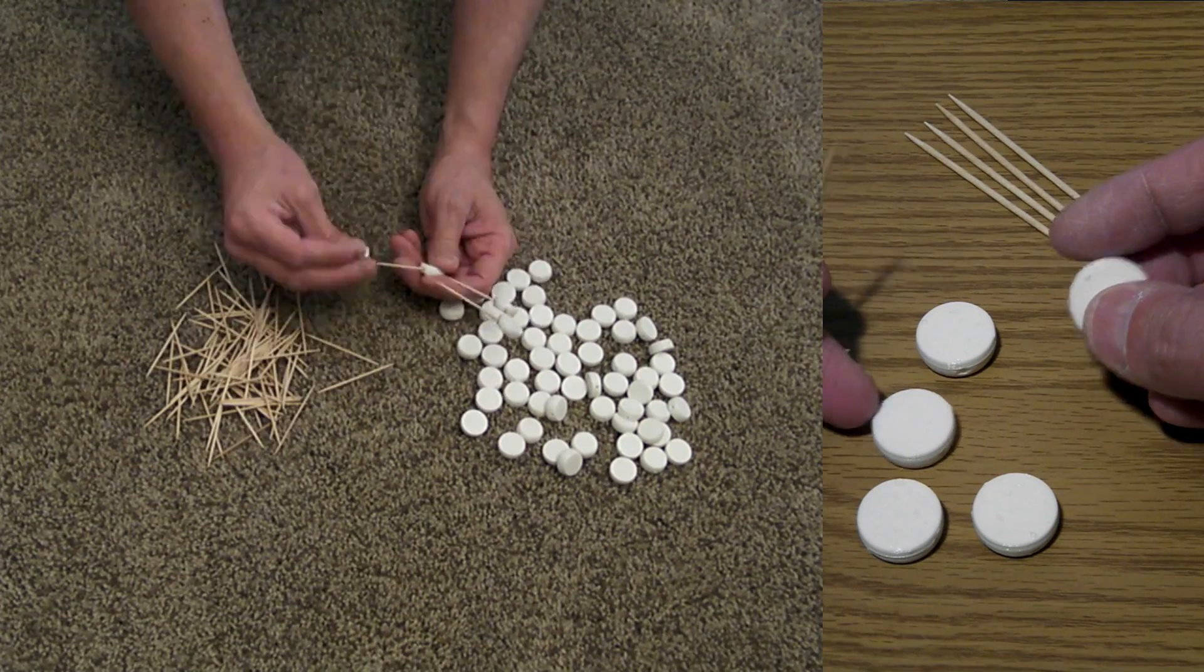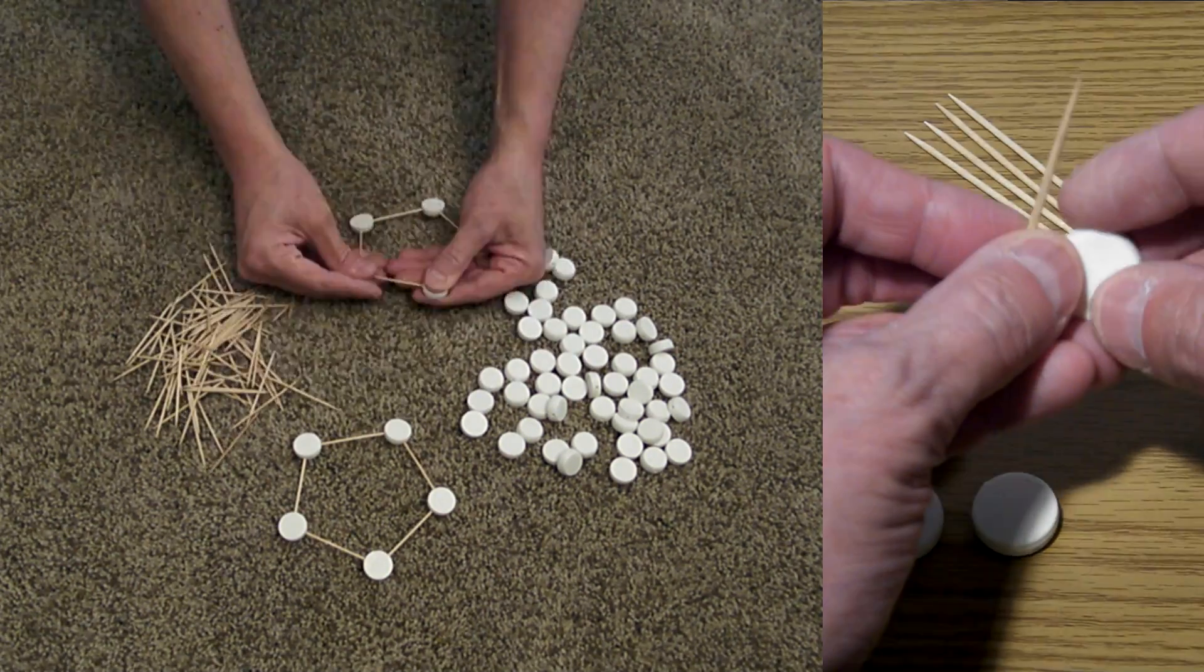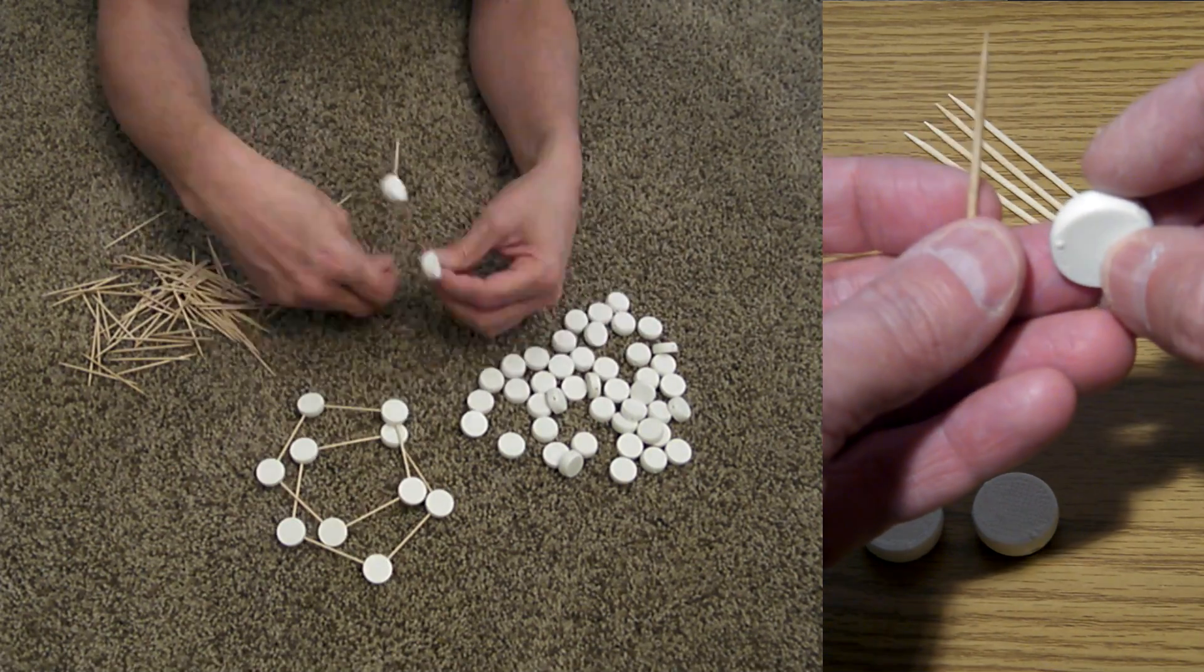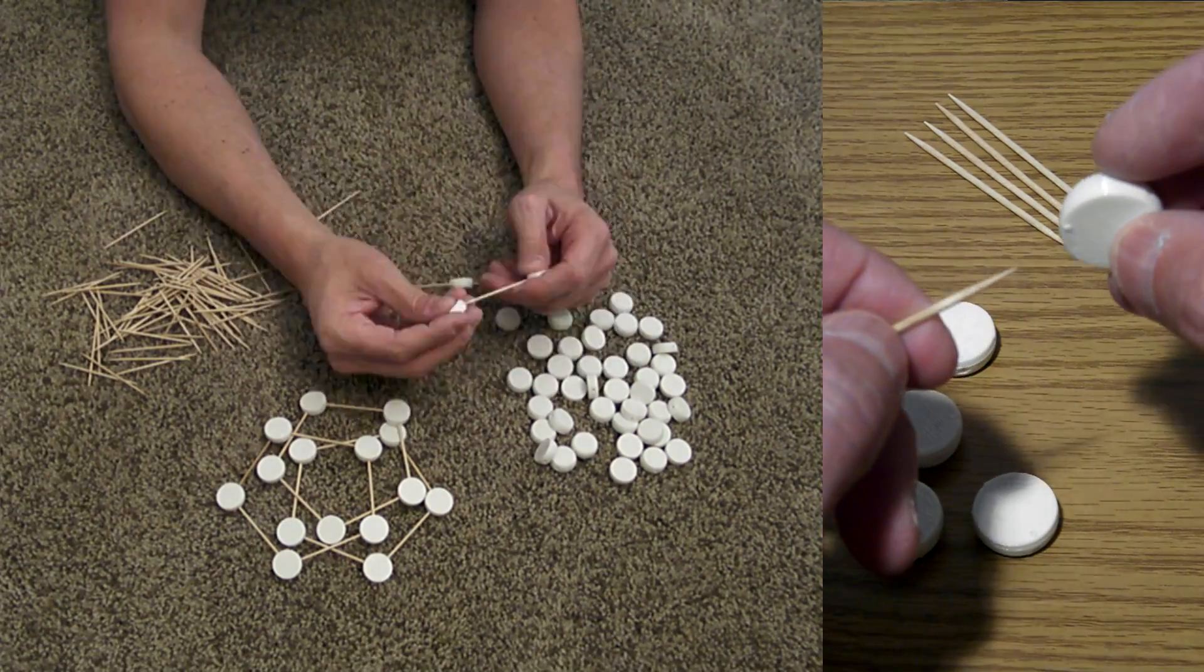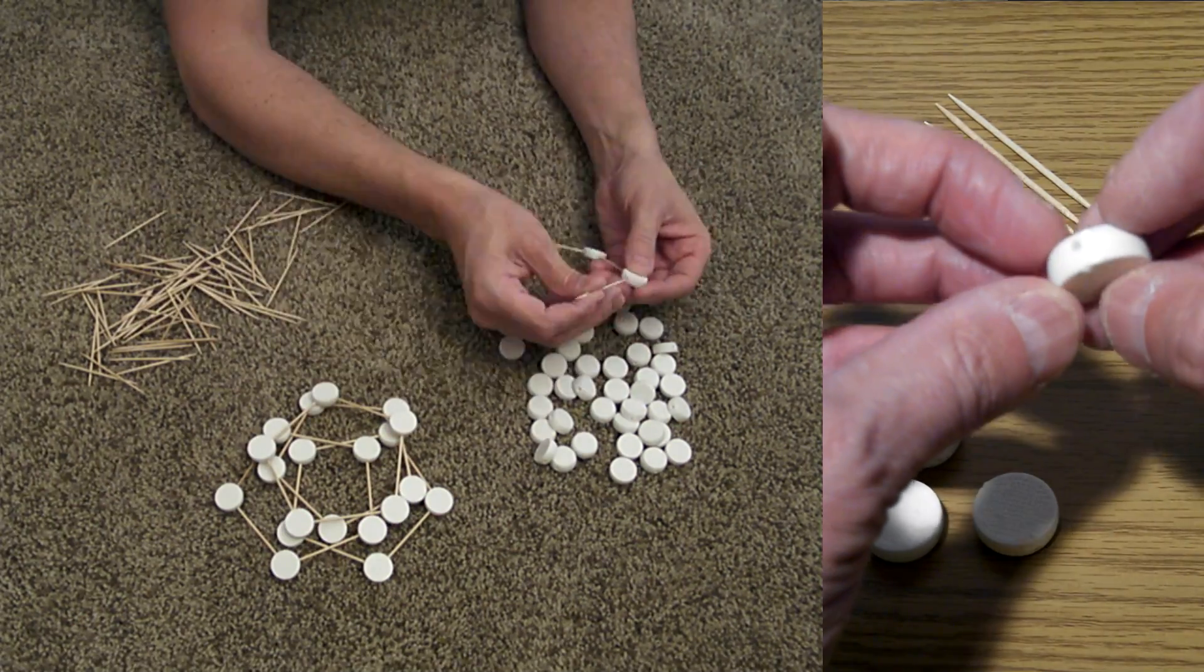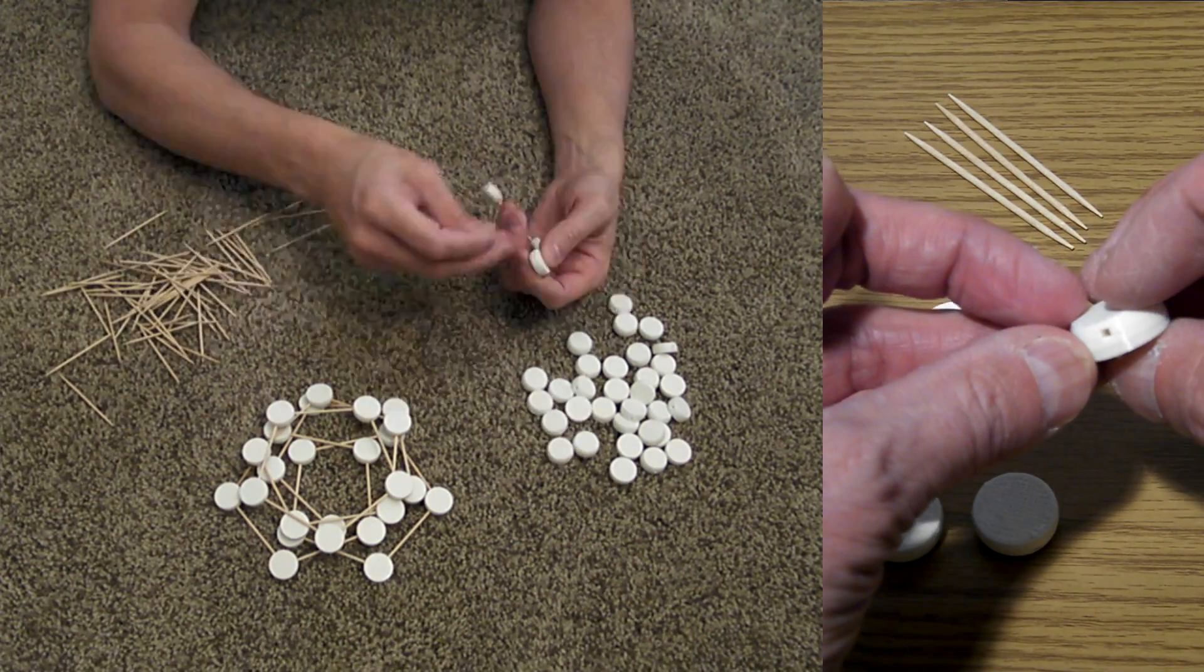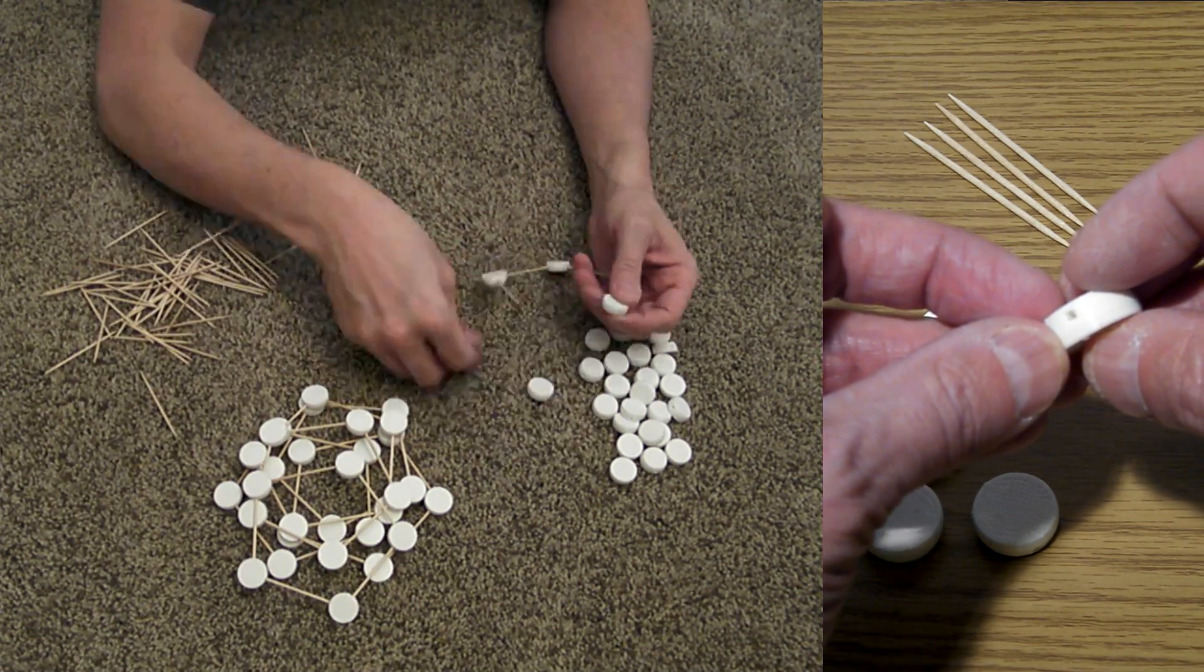You do that by connecting the toothpicks between the nodes. If you notice in the model on Thingiverse, there's a small dot on one of the corners of the node that indicates which corner or toothpick is going to create a side of one of the hexagons.